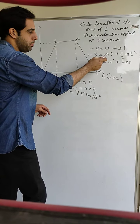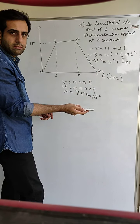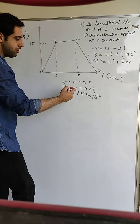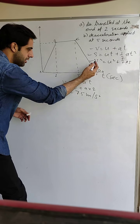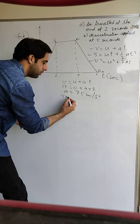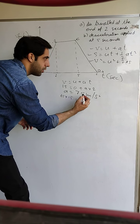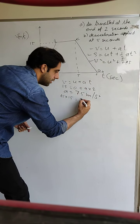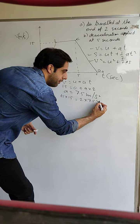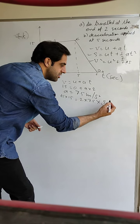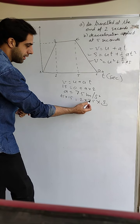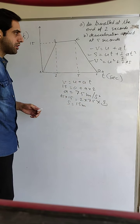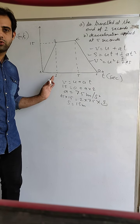After getting the value of acceleration, we can choose any equation. Suppose I take the third equation and substitute: v² = u² + 2as. So 15² = 0² + 2 × 7.5 × s. Solving this, s comes out to be 15 meters. So at the end of two seconds, the body has traveled 15 meters.